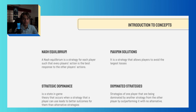Nash Equilibrium is a strategy for each player such that every player's action is the best response to the other player's actions. Maximum solutions refer to a strategy that allows players to avoid the largest losses. Strategic dominance is a state in game theory that occurs when a strategy that a player can use leads to better outcomes for them than alternative strategies.